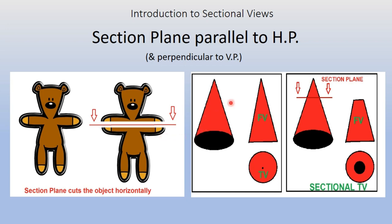To illustrate that concept, we take a cone. When viewed from the front it forms a triangle, and from the top it has a circle with the apex point at the center. When the section plane is parallel to HP, if we remove the top portion, the front view will no longer be a full triangle — only the lower portion remains. In the top view, one more circle becomes visible, shown in dark, and the sectioned portion is represented with hatching lines.